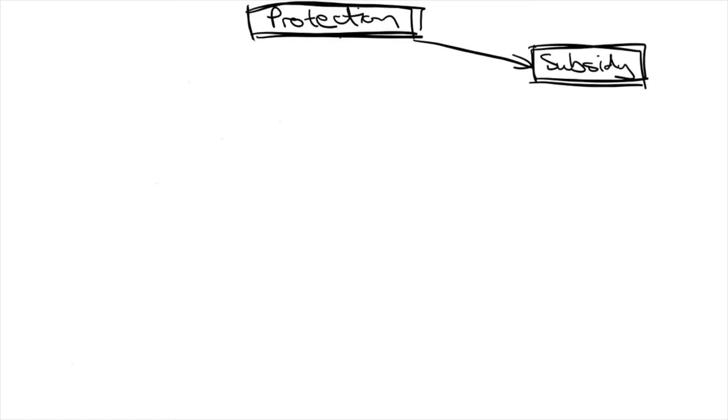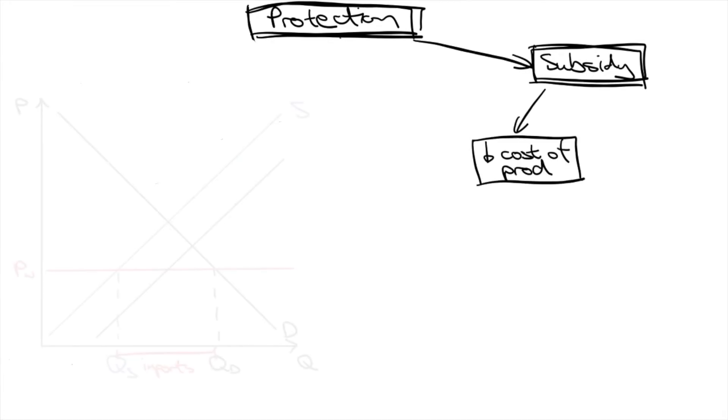One more diagram to look at is the subsidy diagram. A subsidy is financial assistance from the government to lower the production cost per unit for the domestic producer. Do you know how subsidies impact the market diagram? It shifts the supply curve to the right, as producers can offer a greater quantity at a lower price.